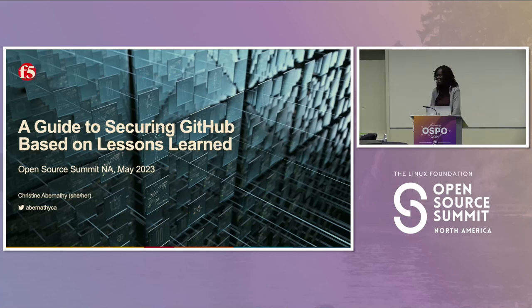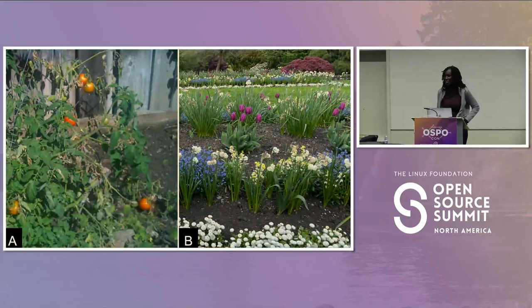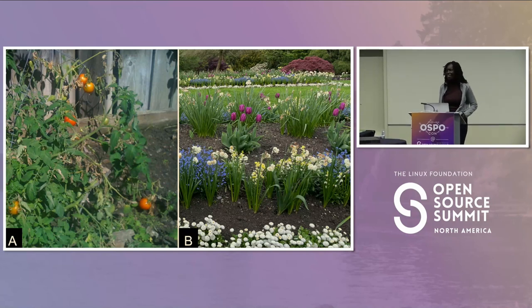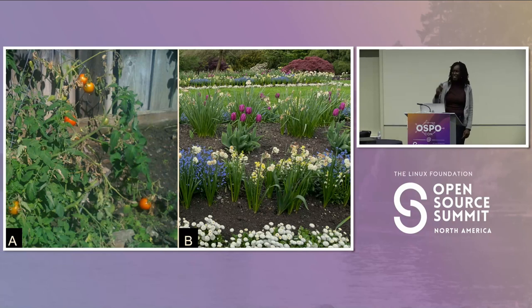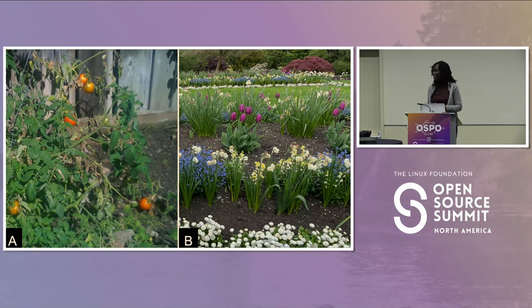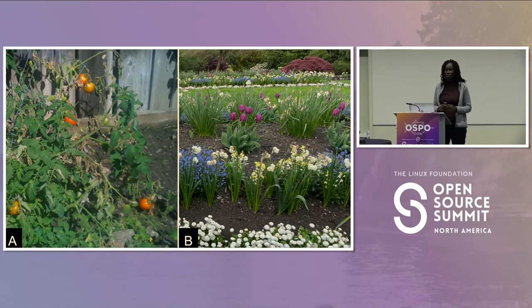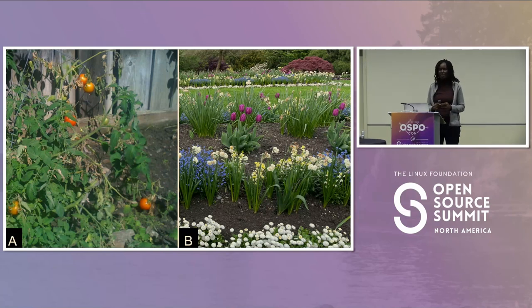A quick question for those here: which garden would you prefer — A or B? The B's have it. That picture was taken yesterday; I got a chance to visit Stanley Park, which is a beautiful place. Unfortunately, A comes from my back garden in Campbell — a sorry sight. But I was inspired by one of our open source ambassadors at F5 who wants to write an article about community and gardens.